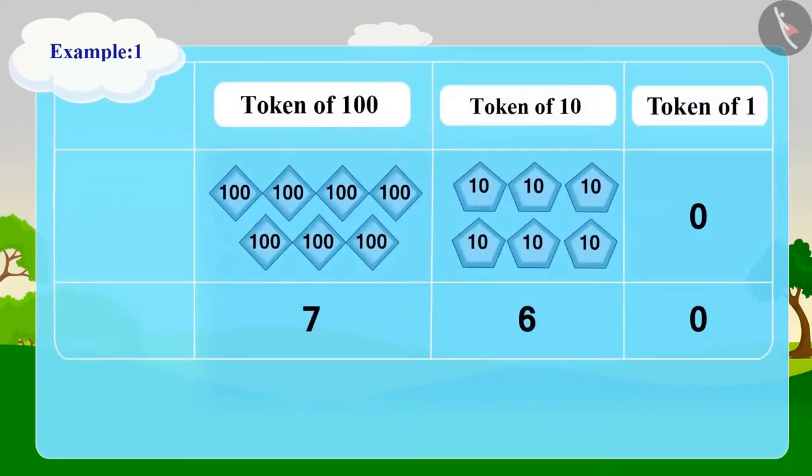Let us understand the process. We can write seven tokens of 100 for the number 700, then six tokens of 10 for 60, and finally there are no tokens for one. So we will write zero in the token of one. Now we can easily identify three-digit numbers in this expanded form.